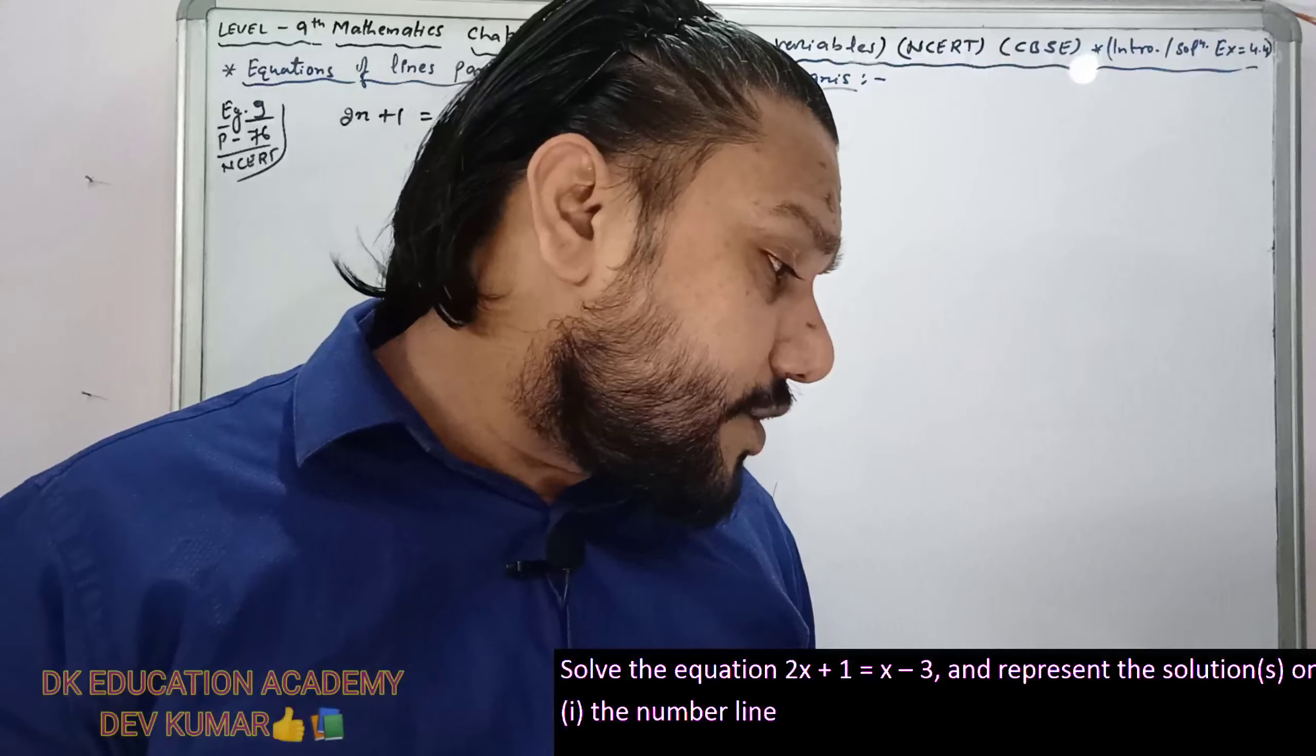Now we have to plot this on number line. Number line is zero, right side positive 1, 2, 3, 4, left side negative minus 1, minus 2, minus 3, minus 4. So here we have the point x equals minus 4. We plot it on the number line.